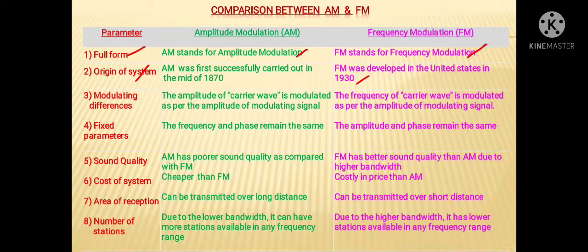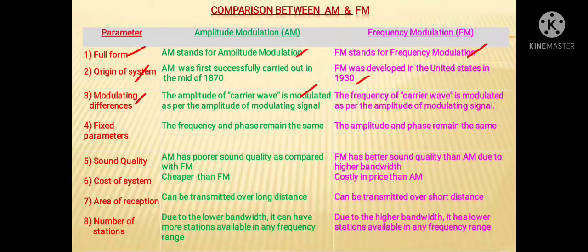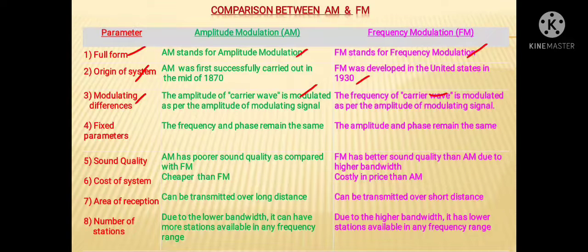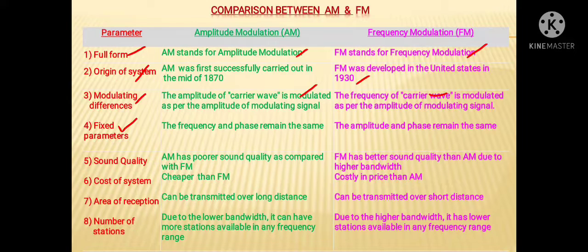Regarding its modulating concept, the amplitude of the carrier wave is modulated as per the amplitude of the modulating signal. That means in this case, the amplitude of the carrier wave is going to change. And in FM, the frequency of the carrier wave is modulated as per the amplitude of the modulating signal. The frequency and phase remain the same in case of amplitude modulation, whereas in case of FM, the amplitude and phase remain the same.